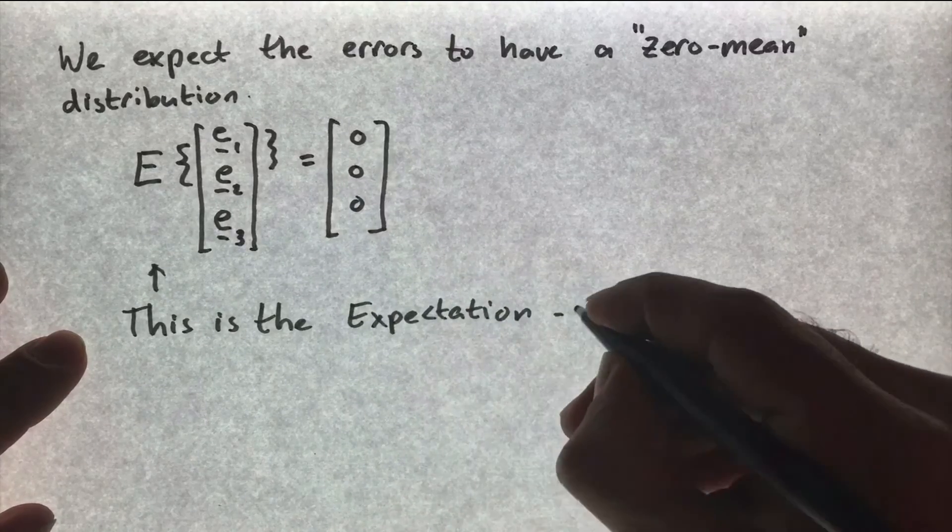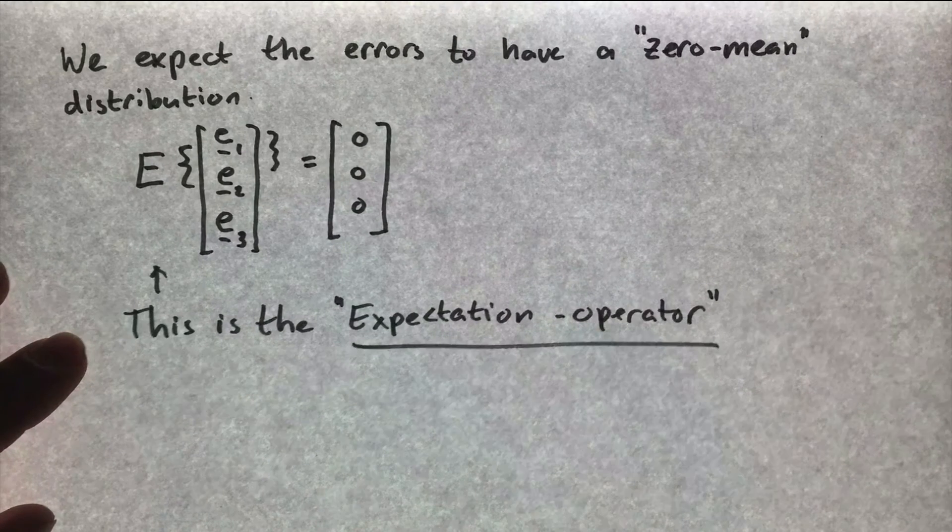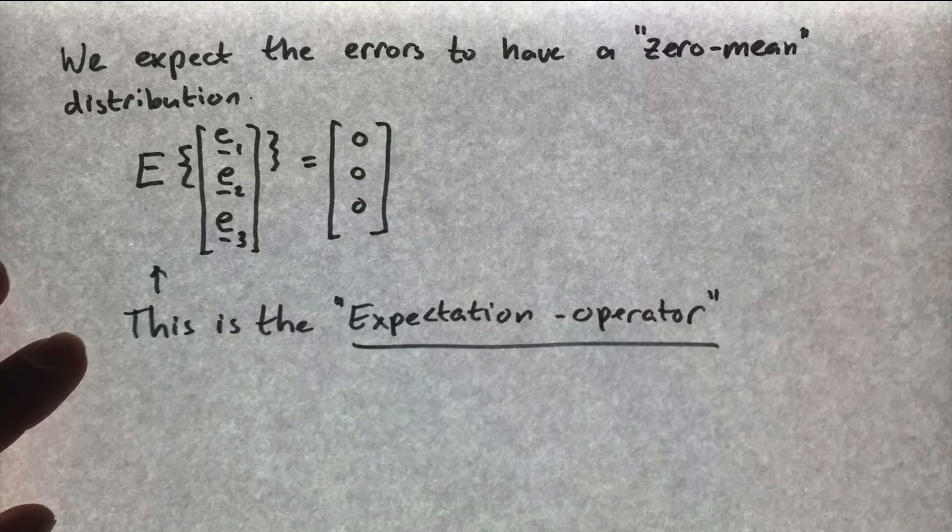The letter E, in combination with the curly brackets, represents the expectation operator, and it will be a standard part of our functional model of observation equations.